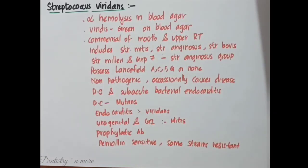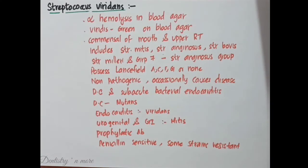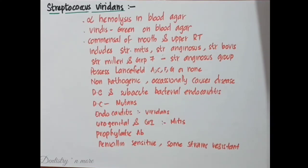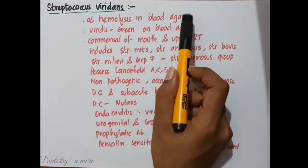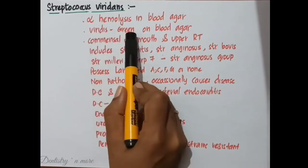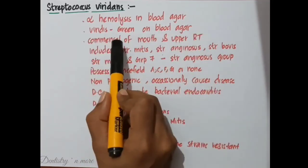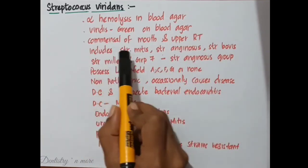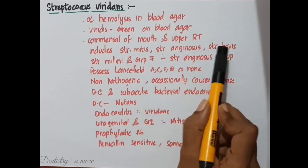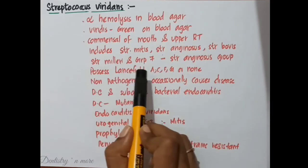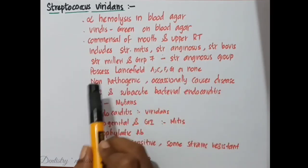Streptococcus viridans is a very important portion frequently asked as a short note, and sometimes as cariogenic bacteria. They show alpha hemolysis on blood agar. Viridans means green, and as they show alpha hemolysis they exhibit greenish discoloration on blood agar. They are common commensals of the mouth and upper respiratory tract. They include Streptococcus mitis, Streptococcus anginosus, Streptococcus bovis, and Streptococcus milleri. Group F are included in the Streptococcus anginosus group. They may possess Lancefield antigens A, C, F, G, or none at all. Usually they are non-pathogenic but occasionally cause disease.